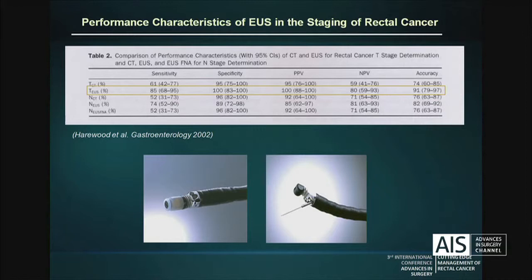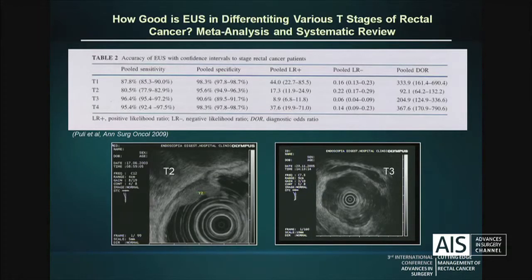Sensitivity is about 85%, specificity 100%, and positive and negative predictive values are also very high. Accuracy is around 90% for T-stage. For N-stage, values are not as good as for T-stage, as happens in all kinds of tumors, and they are around 75, 80, 89, and 90%. In this study, the results of EUS FNA were surprisingly lower, but this is still controversial. We will go on this issue later on.